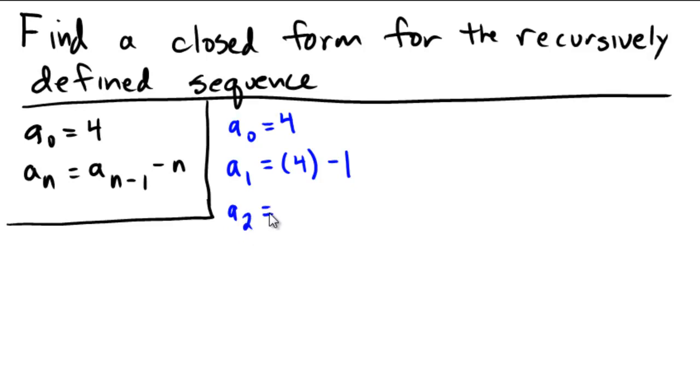Okay, and what is a sub 2? Well, a sub 2 is the previous term minus n, which is 2, but the previous term is 4 minus 1. So instead of calculating and figuring out what this is, I'm leaving it in this form so that way I can manipulate it afterwards.